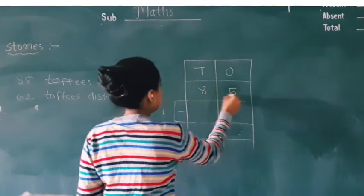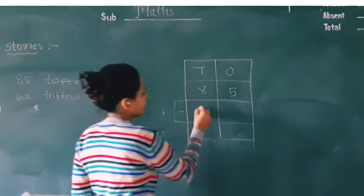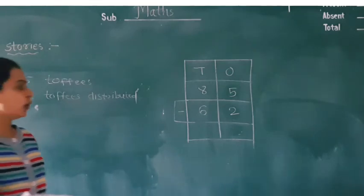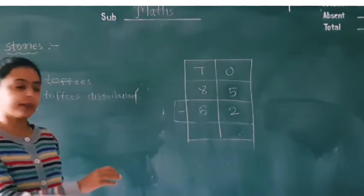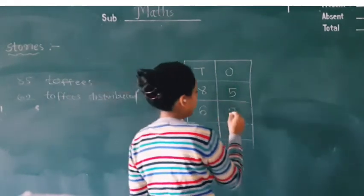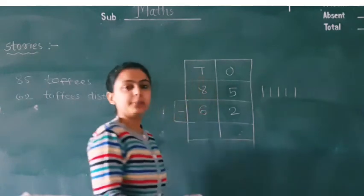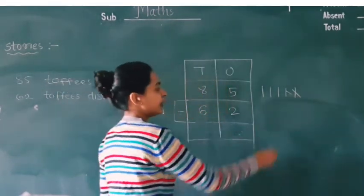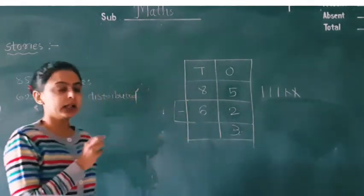Total 85 number of toffees, 62 toffees distribute ki. First step 1: subtract ones instead of tens. So 5 minus 2. 1, 2, 3, 4, 5 minus 2, both cancel. 1 and 2, remaining will be 1, 2, and 3. So here the answer will be 3.